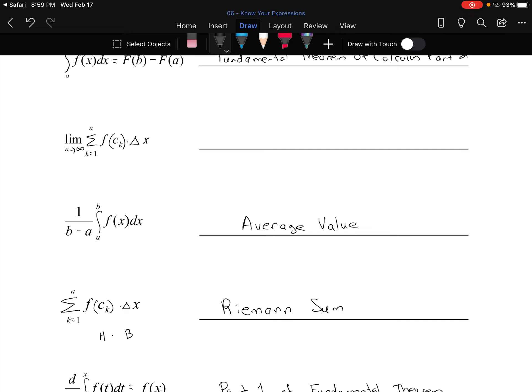This was the base every time and this was the height every time. The base was the delta x at the bottom of the rectangle and the f(c_k) was the height that you got of each of those rectangles. So when we were just adding them up, we called them Riemann sums.